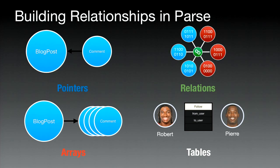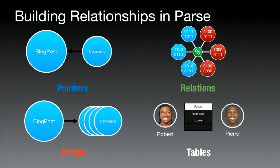Building relationships in Parse — there are four ways. The first is pointers: creating in one object a pointer to another object, giving you a relationship between those two objects. The second is an array: Parse has an array type that lets you store a bunch of objects in a particular column. Third is a Parse relation — a unique construct in Parse that enables many-to-many relationships. And fourth, join tables, where you create a specific table to manage pointers to relationships.